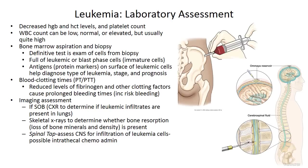When the bone marrow biopsy is taken, we look for leukemic blast phase cells — those immature cells — and for antigens, which are protein markers present on the surface of leukemic cells. These antigens help diagnose the type of leukemia, the stage, and the prognosis. Bone marrow aspiration and biopsy is the definitive test for diagnosing leukemia.